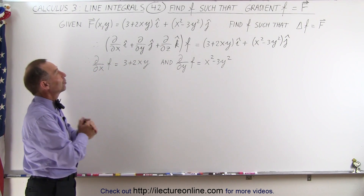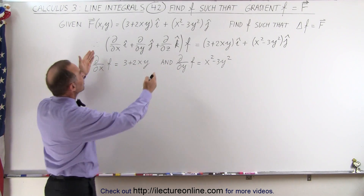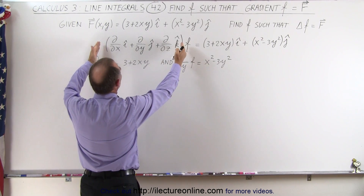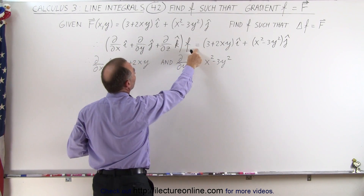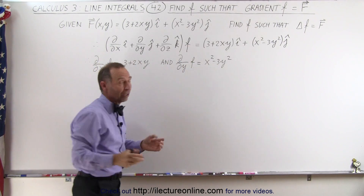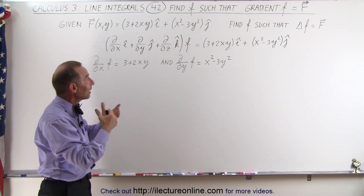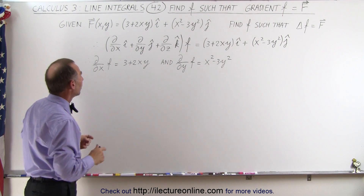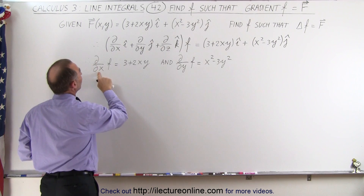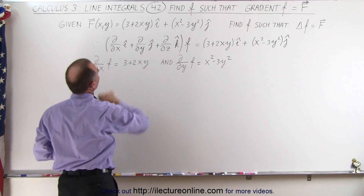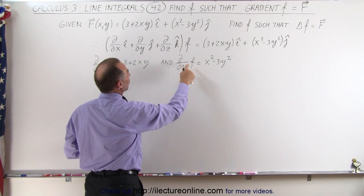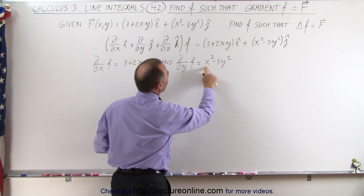Let's try to figure out how to do that. The gradient is shown here in the parenthesis, so we take the gradient of this function and that should equal the vector field. We don't yet know what that function is — that's what we're trying to find. We know that if we take the partial derivative of that function with respect to x, we should get this quantity, and if we take the partial derivative with respect to y, we should get this back.